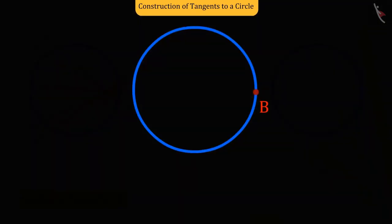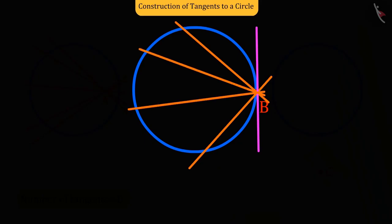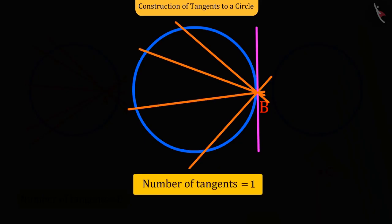The point here is on the circle. And we know that from any point on the circle, there is only one tangent that can be drawn on the circle.